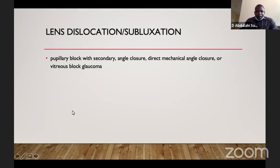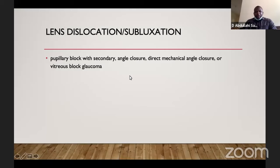I'm going to take them one by one. Starting with lens subluxation and dislocation. The mechanism of glaucoma in this type is pupillary block with secondary angle closure. Sometimes the lens mechanically blocks the angle, or sometimes the vitreous blocks the pupil and results in glaucoma.